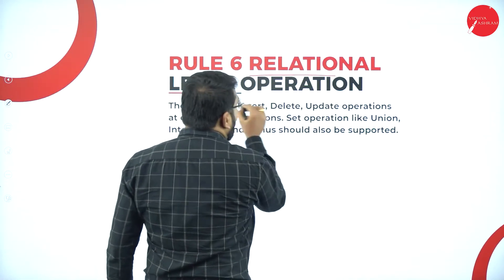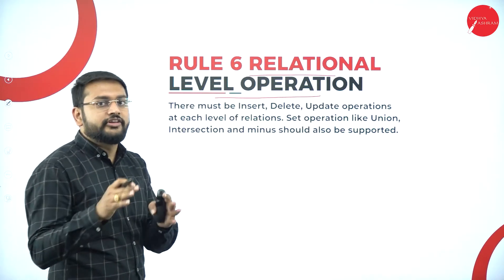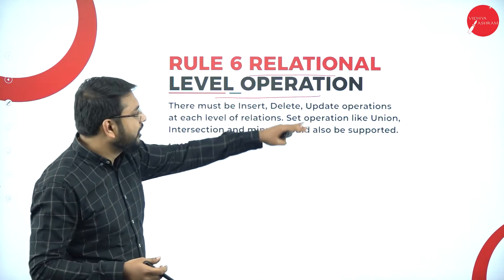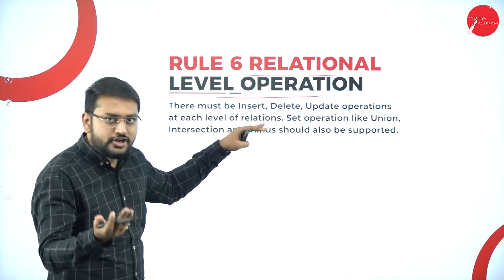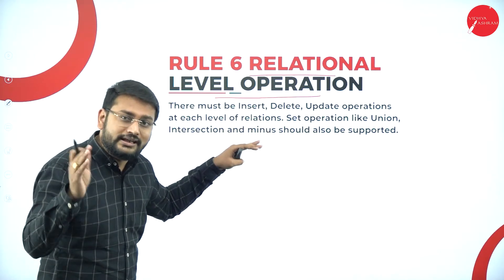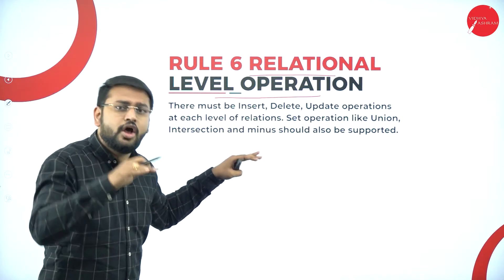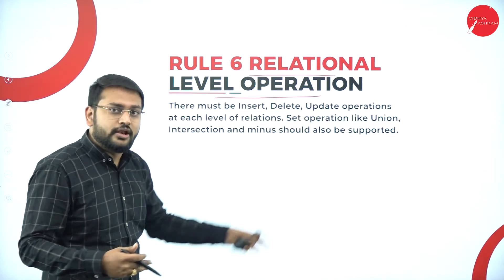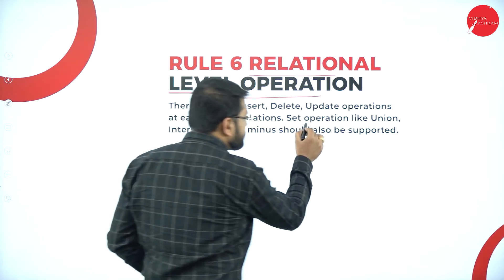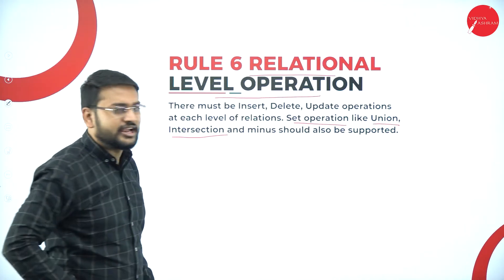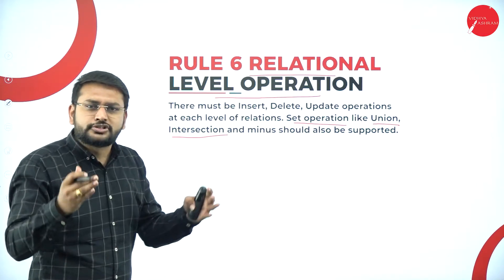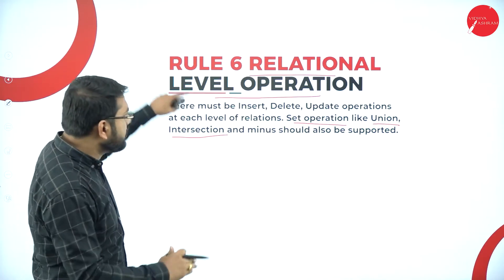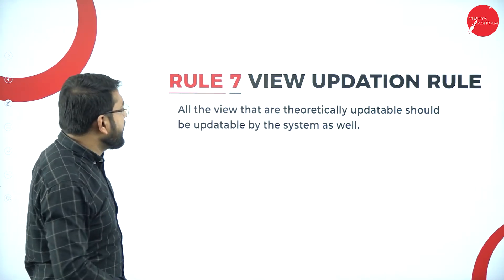Rule Number Six is about relational level operations. The system must be able to perform insert, delete, and update operations at each level of relations. It should also be able to perform set operations like union, intersection, and minus at each level of relation. That is what Rule Number Six says.